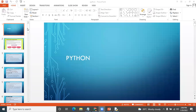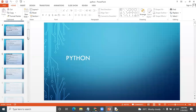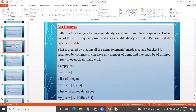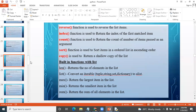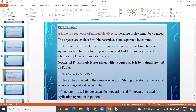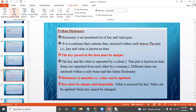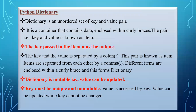Good afternoon, everyone. In the last session, we were discussing about dictionary — how to create a dictionary. It is an unordered set of key and value pair. It contains data enclosed within curly braces. That pair, the key and value, is known as the item. The key passed in the item must be unique, and we separate the key and value using the colon operator.